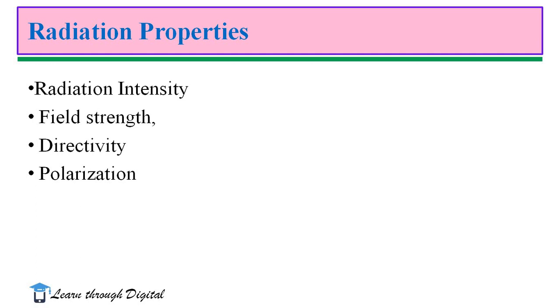There are some radiation properties: radiation intensity, field strength, directivity, and polarization. In the radiation pattern, field strength is plotted with respect to the space coordinates.